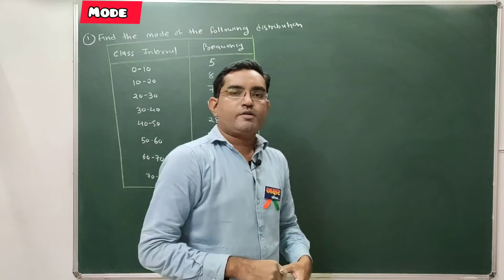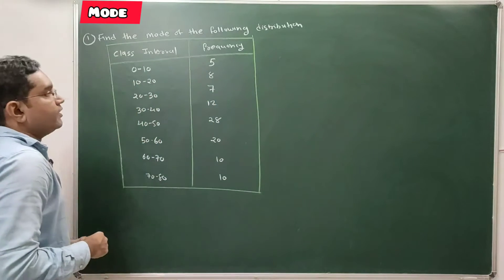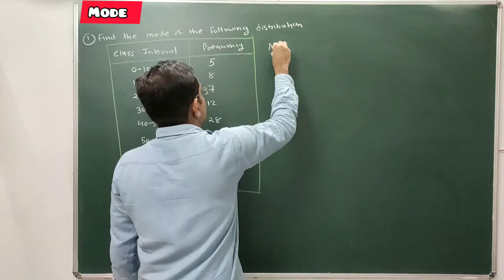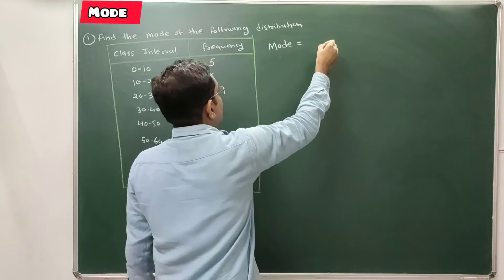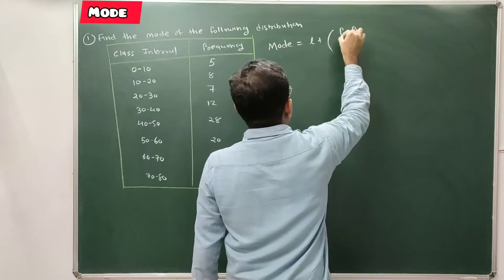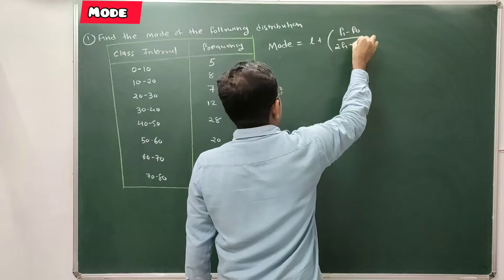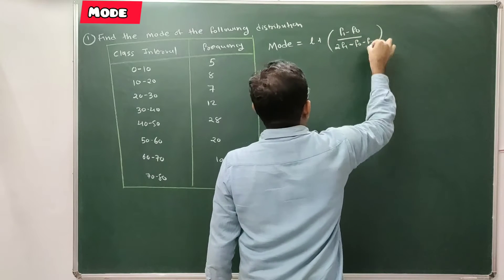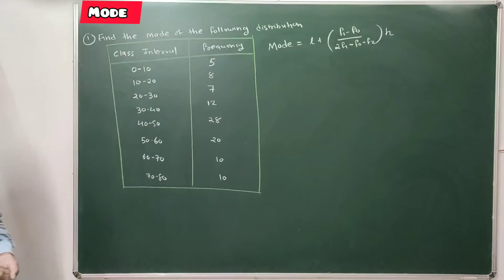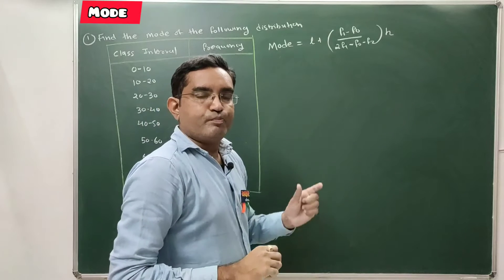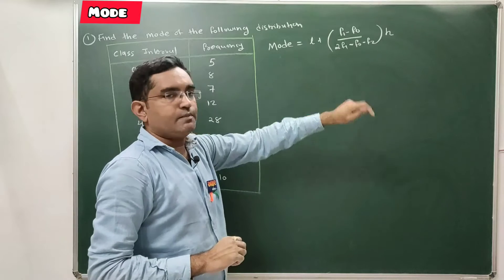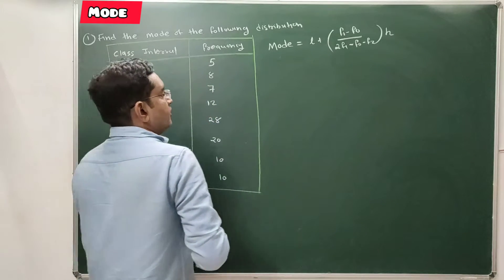Now we are going to discuss how to find the mode of any given distribution. The formula is: l plus (f1 minus f0) upon (2f1 minus f0 minus f2), into h.